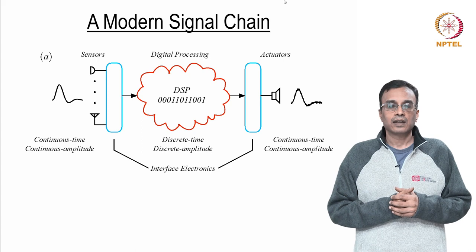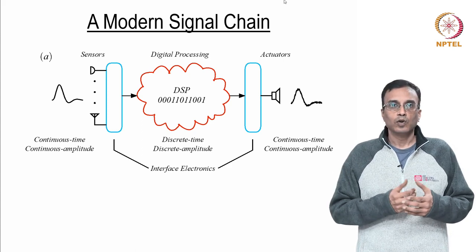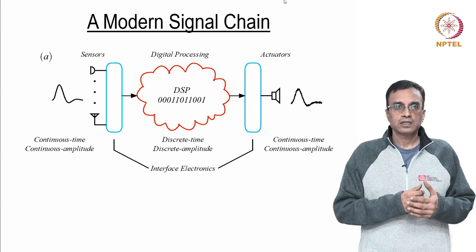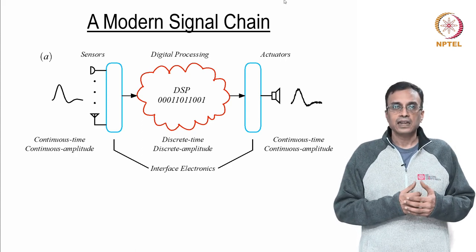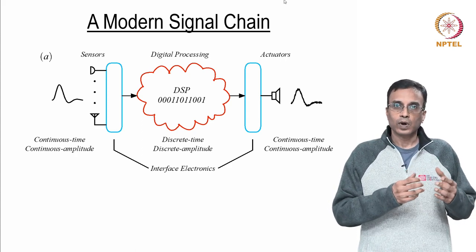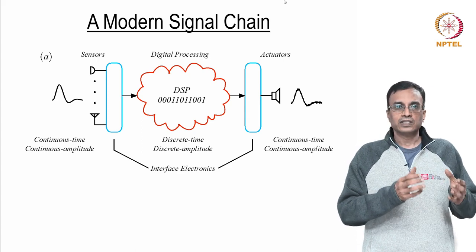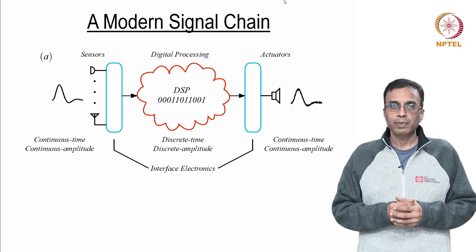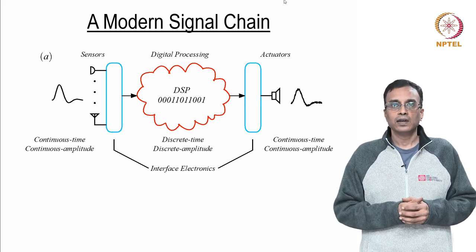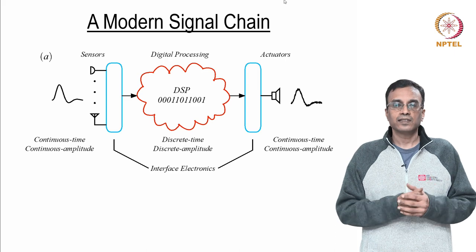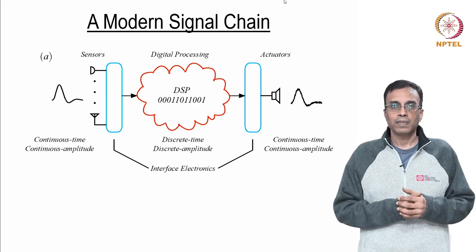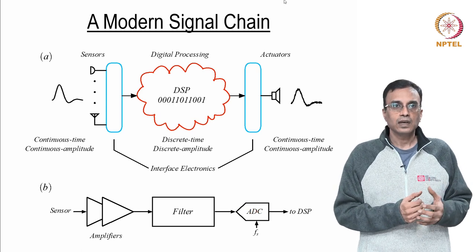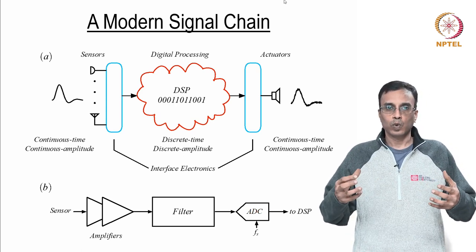It turns out that a modern signal chain looks basically like this. A variety of sensors — audio, touch, inertial, and RF — are needed to interface the real world to the virtual world. Real world signals, as you all know, are continuous in time and amplitude, while the digital world knows only signals that are discrete in time and amplitude. So we need circuitry to interface between the real world and the virtual world.